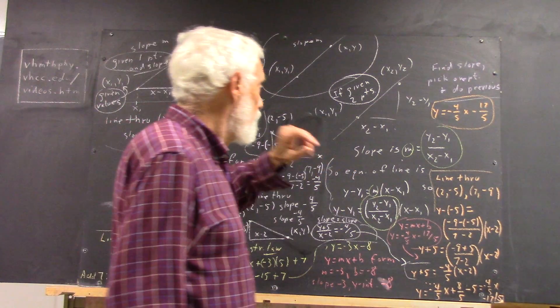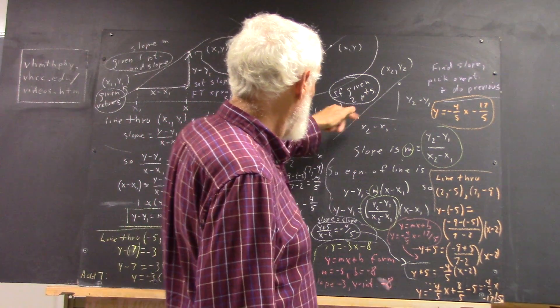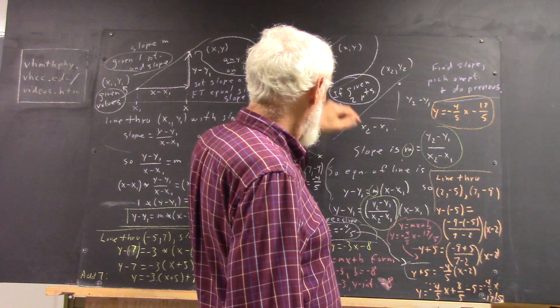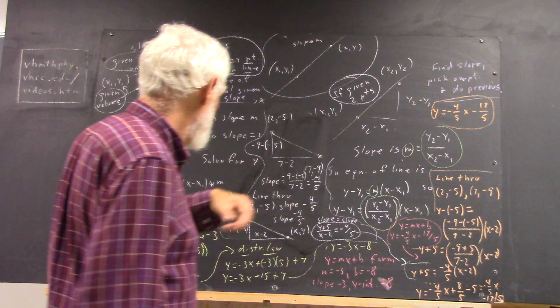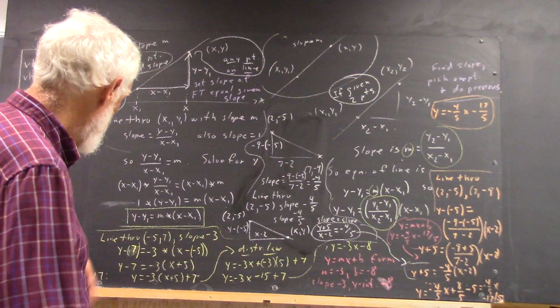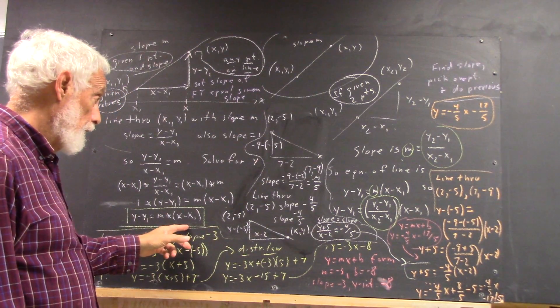And over here, we do essentially the same thing, but first, we set up the fundamental triangle for our two given points and find its slope, as we could have done here and as we did in the example. And then we plug that slope in here and get that.